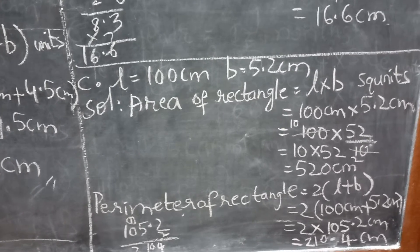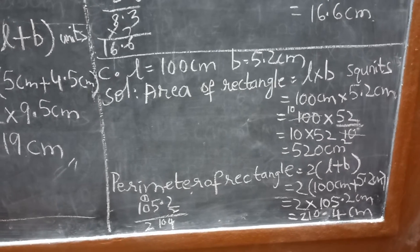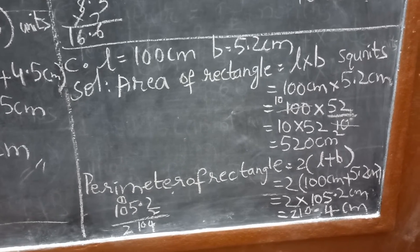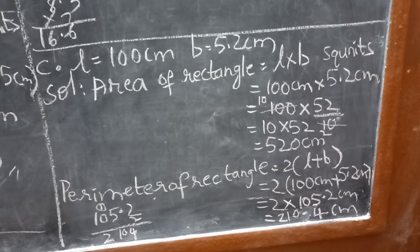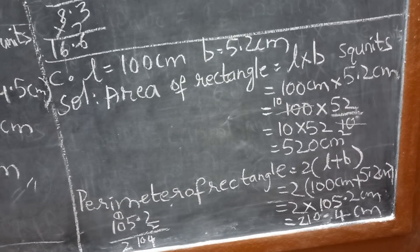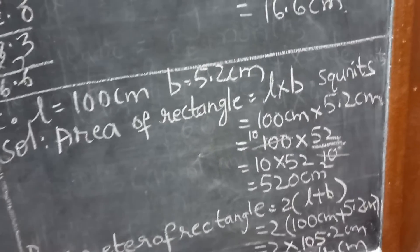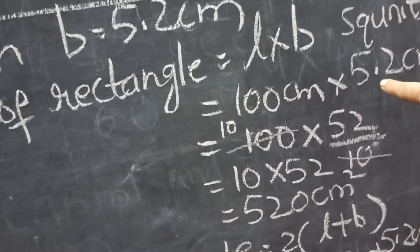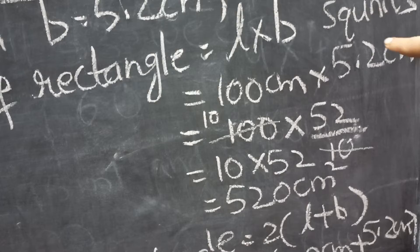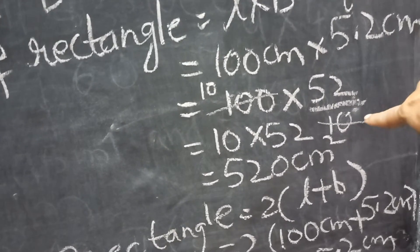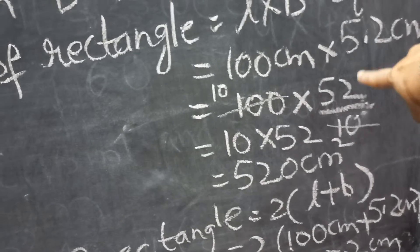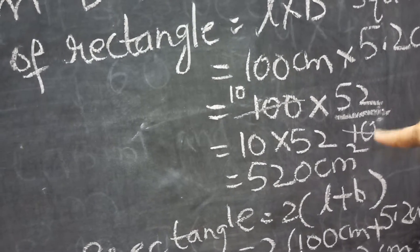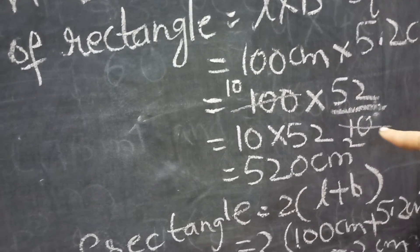Now for part C: L value is 100 centimeters, B value is 5.2 centimeters. Area of rectangle is L into B square units. I substitute 100 and 5.2. For 5.2, I remove the decimal — decimal after one digit — so I put one zero below, making it 52 over 10. The decimal is removed and converted.